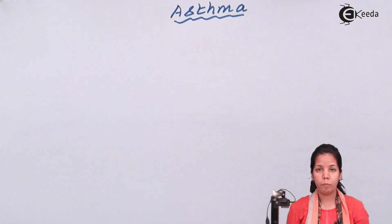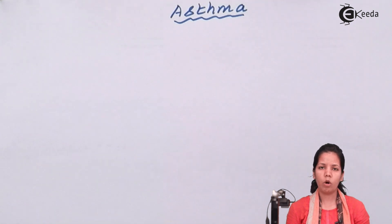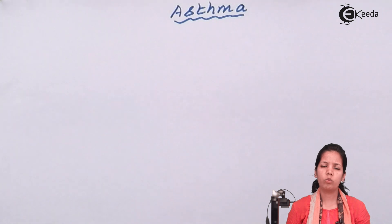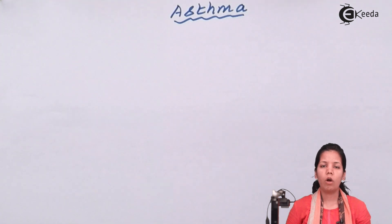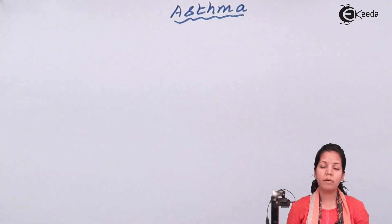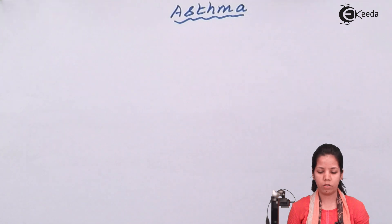Asthmatic attacks may be caused due to the secretion of mucus in the bronchial region, or due to certain cold temperatures or allergens, which actually stimulate the immune system to produce certain substances that secrete mucus as a secondary response.